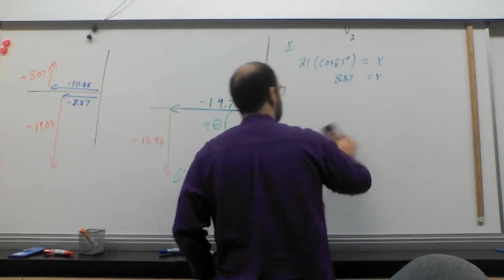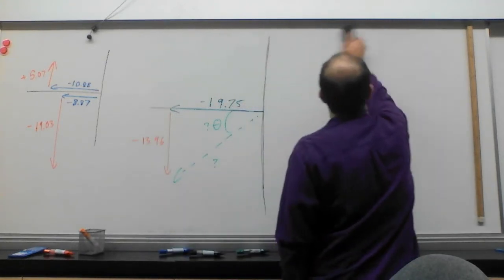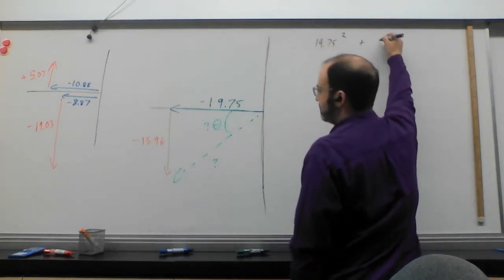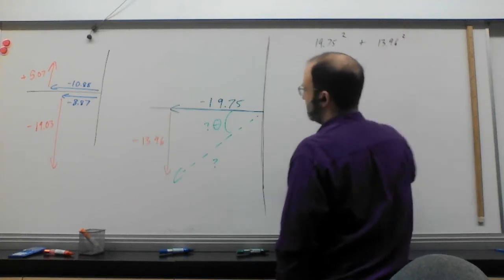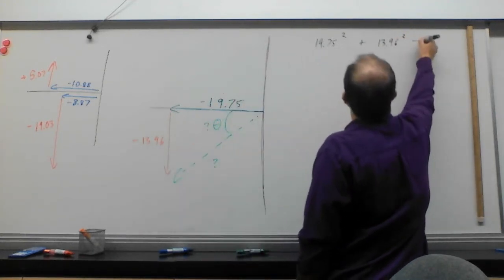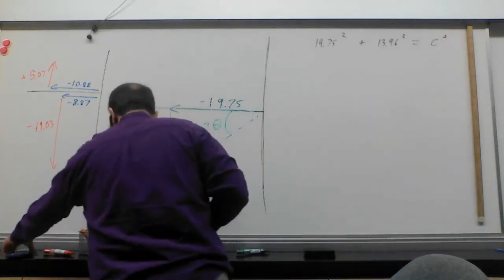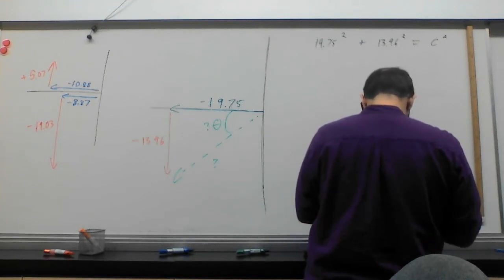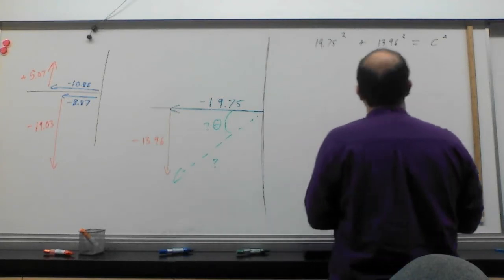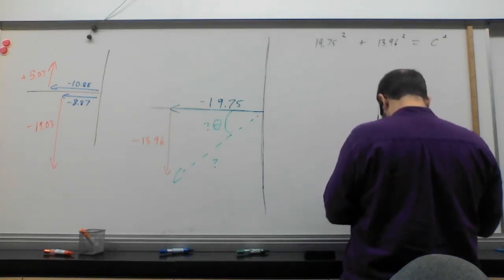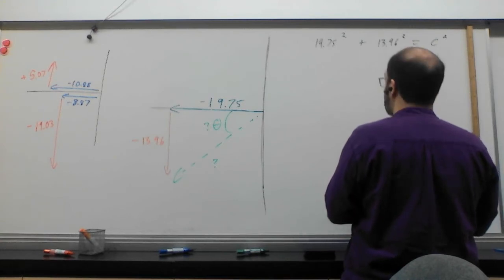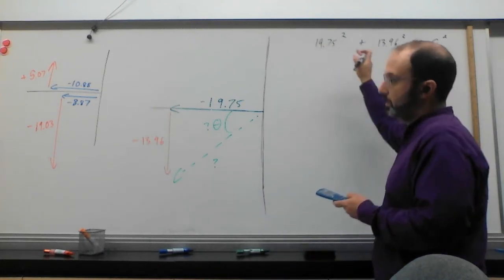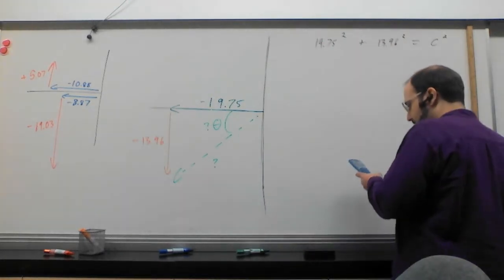All right. Let's do this. We're going to take our 19.75. We're going to square it. We've got ourselves a 13.96. We're squaring it. Right? Because this is A and this is B. And this is C. C squared. They're not writing nice round numbers, of course, but we can't have everything. We're going to get ourselves that squared plus 19.75 squared. You may notice that I didn't put any negatives in here. Yes. Both of them are negative, but they're squared. So they're both going to become positive anyway.